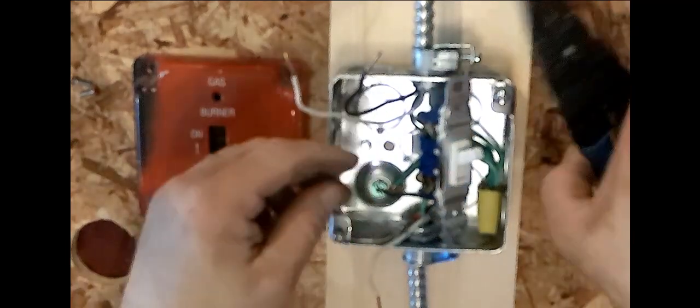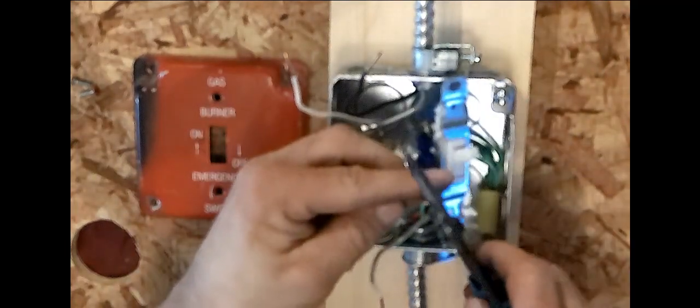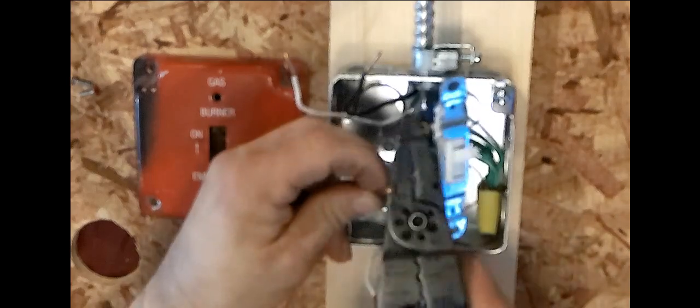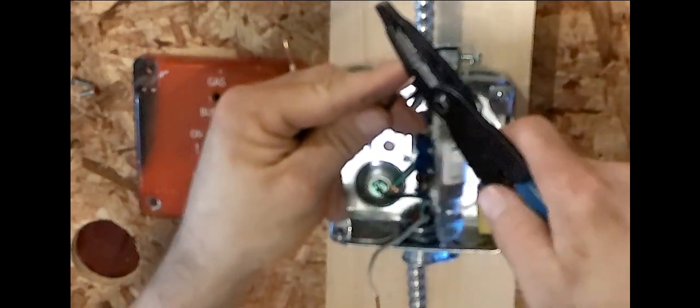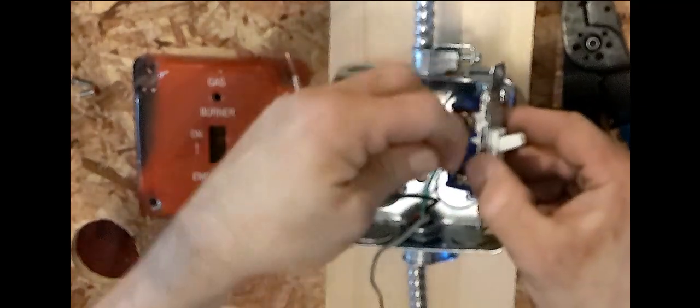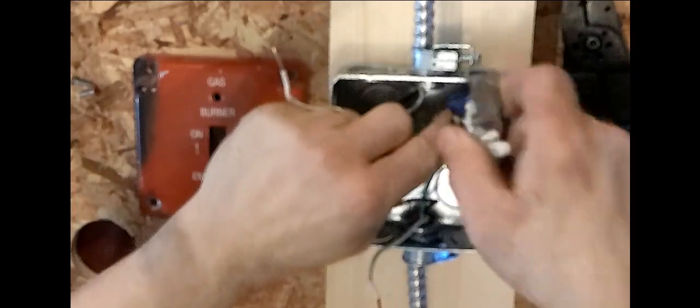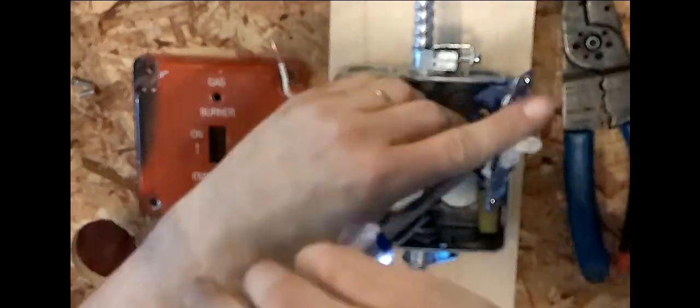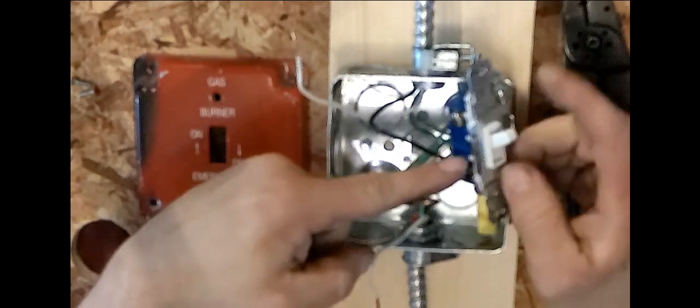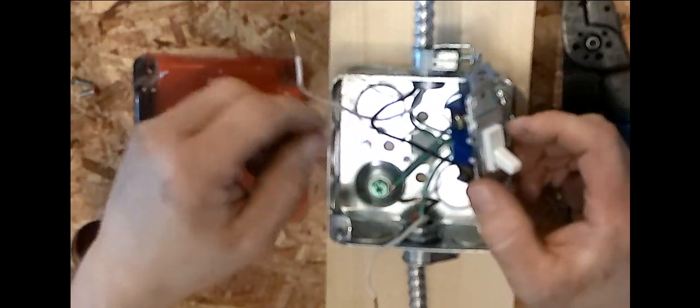So again, I will take my wire strippers, I will bend the wire over into a little loop. I will take my line voltage, connect it beneath the wire here in the same direction I tighten the screw. So now our line voltage is connected to the terminal in our off position.